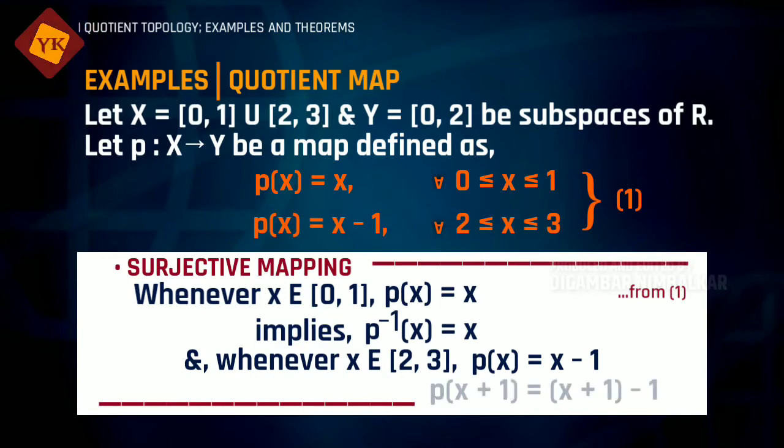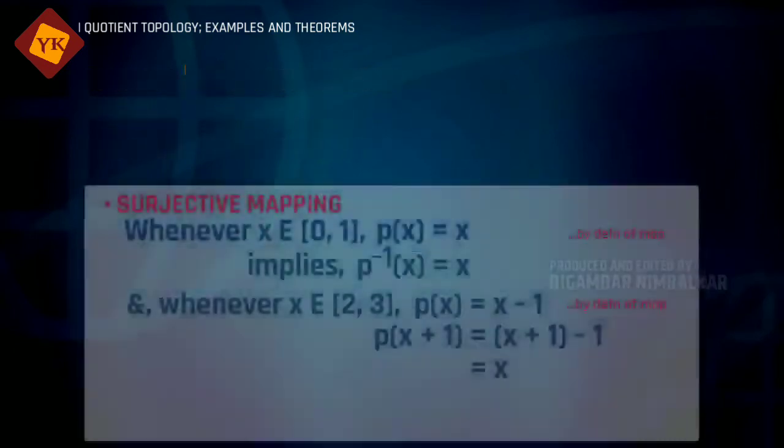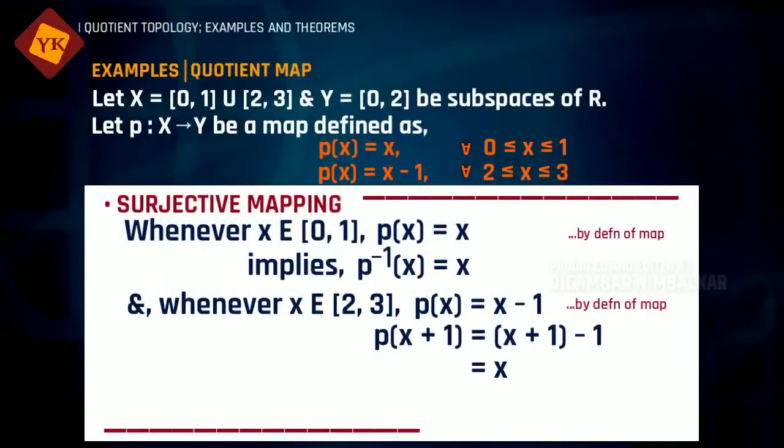So from this we can write p(x+1) = (x+1) - 1 which is equal to x. So p(x+1) = x implies p inverse of x is equal to x + 1. So whenever x belongs to [2,3], we will have p inverse of x is equal to x + 1.